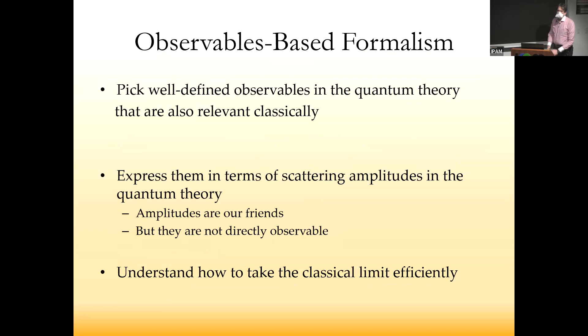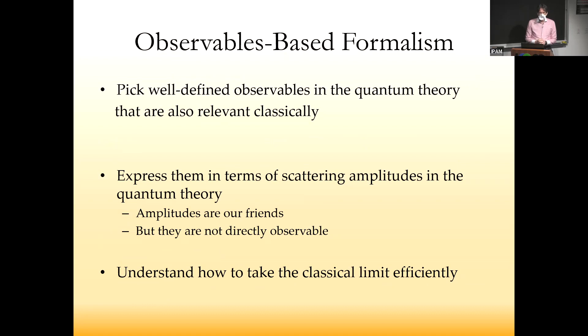We're working within the observables-based formalism that Ben, Donald and I laid out a couple of years ago. The idea is to pick well-defined observables in the quantum theory that are also relevant classically. We express them in terms of scattering amplitudes in the quantum theory, and then we understand how to take the classical limit efficiently. One thing worth keeping in mind is that amplitudes are our friends, but they're not directly observable.